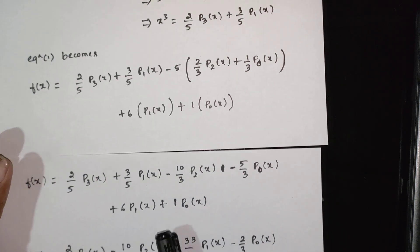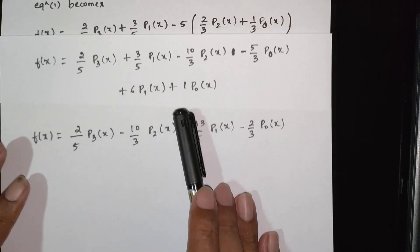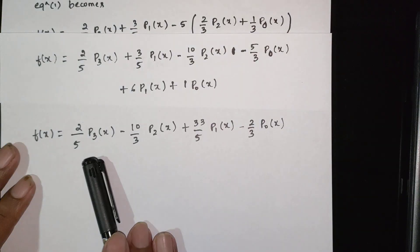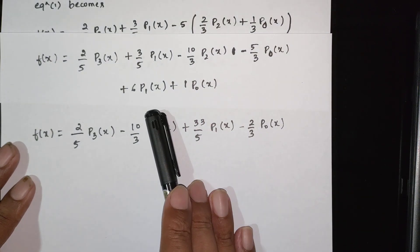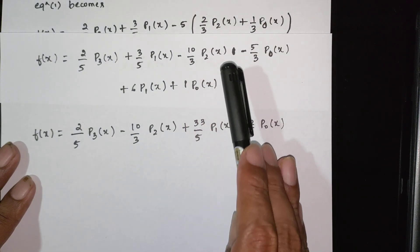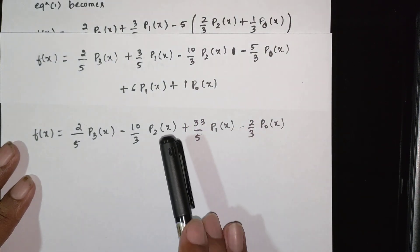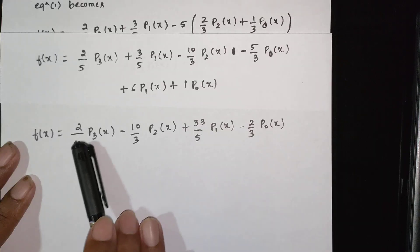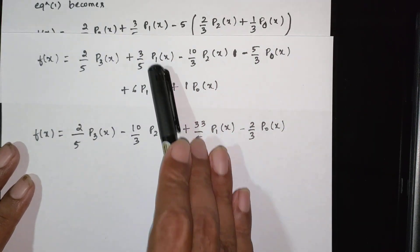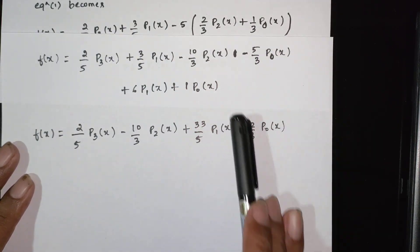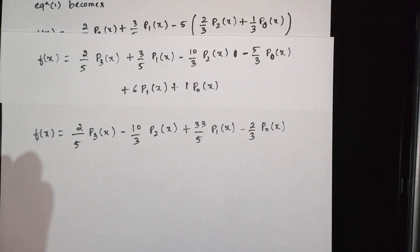Collecting all P1 of x terms: (3/5) minus (5/3) plus 6, and P0 of x terms combined. The final expression gives f(x) in terms of Legendre polynomials P0, P1, P2, and P3.